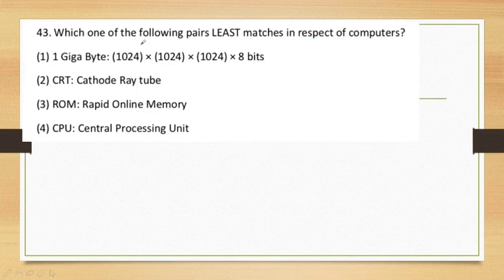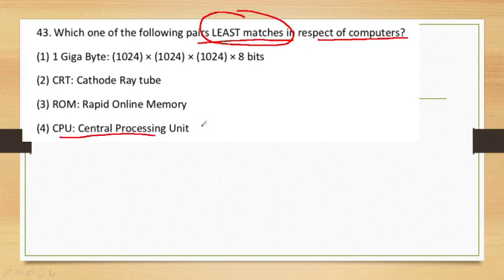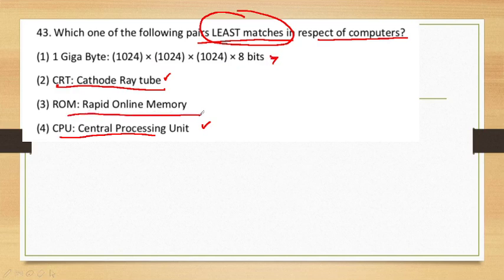Next question: Which of the following pairs is the least match in respect of computers? CPU and CRT are correct matches. The point of confusion is ROM — ROM stands for Read-Only Memory, not 'Rapid Online Memory.' Since that full form is incorrect, the answer to the least-match question is option three.